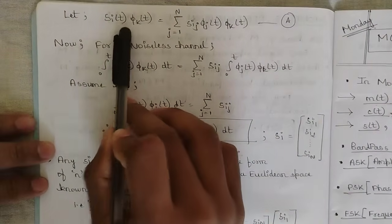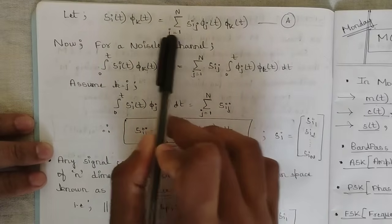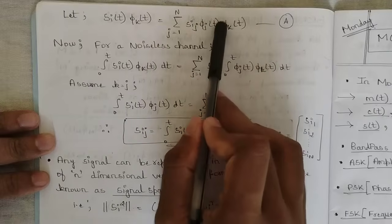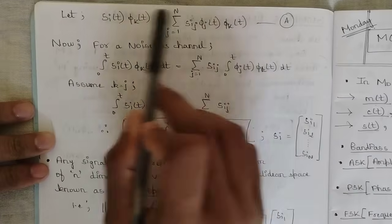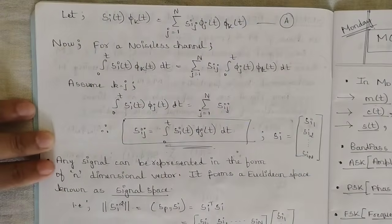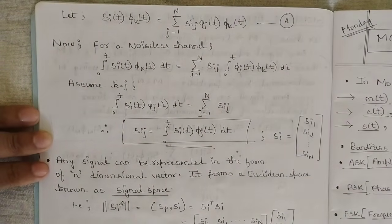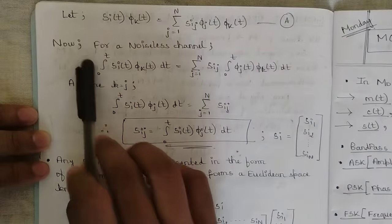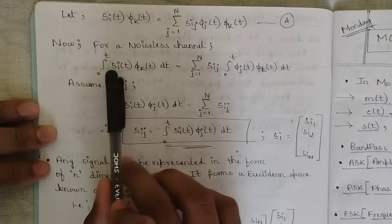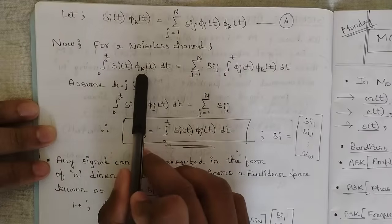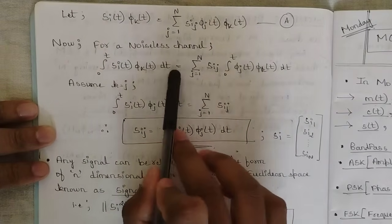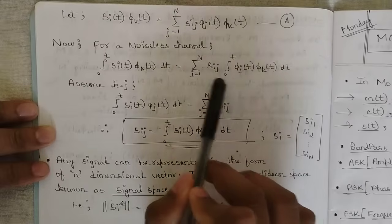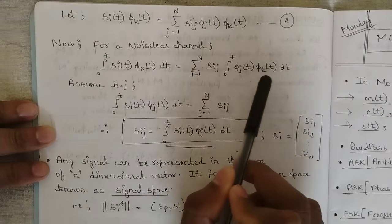Let SI(T) · φ_K(T) equal the summation from J=1 to N of SI_J · φ_J(T) · φ_K(T). In the equation for SI(T), I have multiplied φ_K(T) — one more orthonormal basis function — on both sides, in order to recover the original signal. For a noiseless channel, we introduce integration from 0 to T on both sides, giving: integral of SI(T)·φ_K(T)dT = summation from J=1 to N of SI_J · integral of φ_J(T)·φ_K(T)dT.